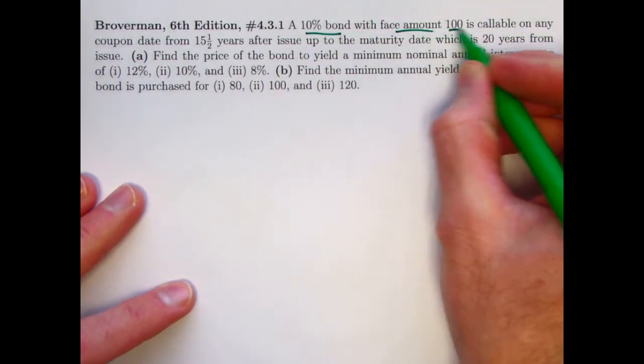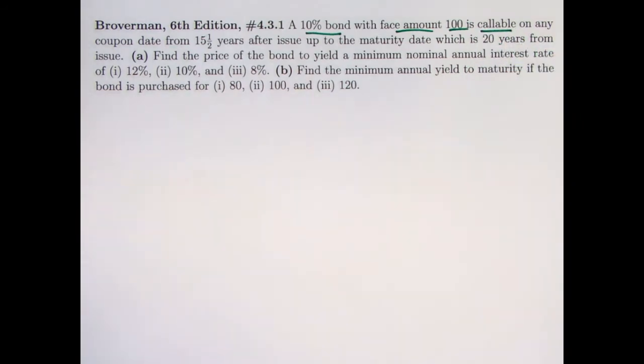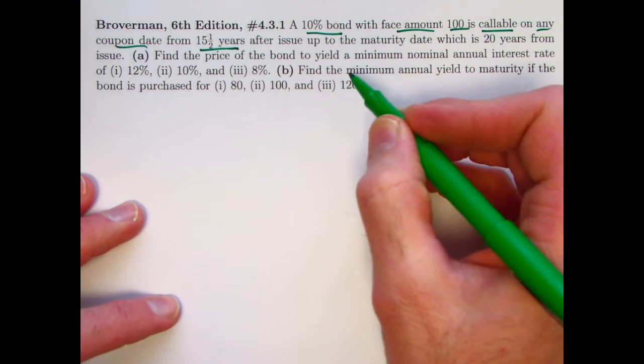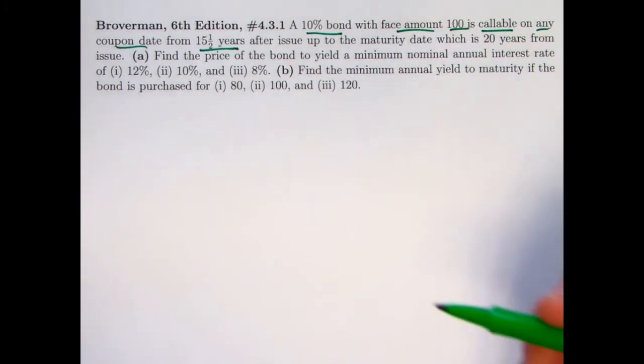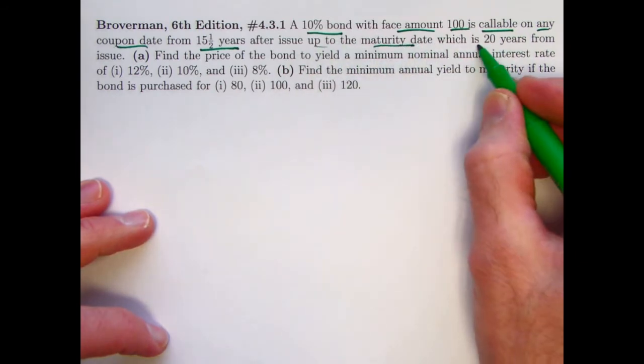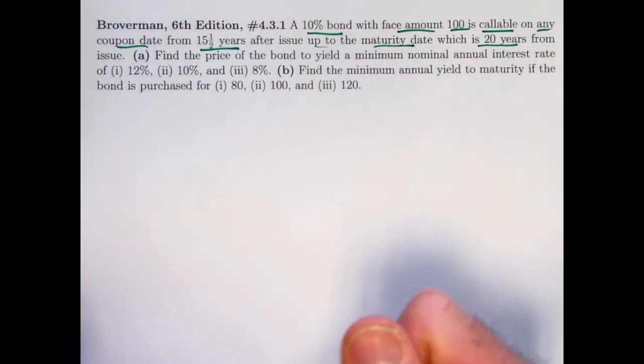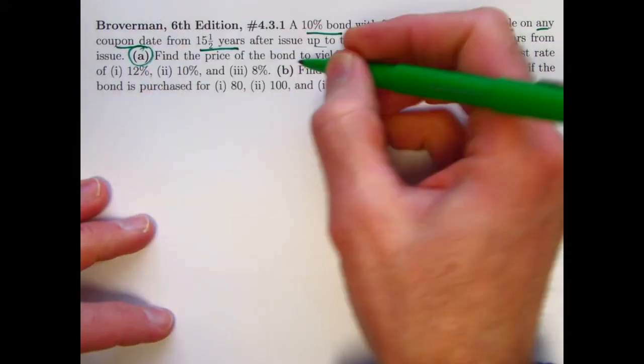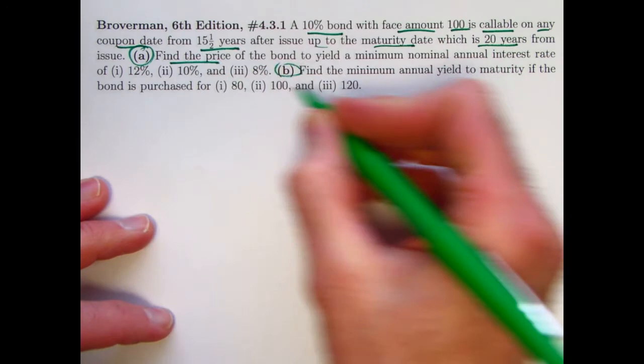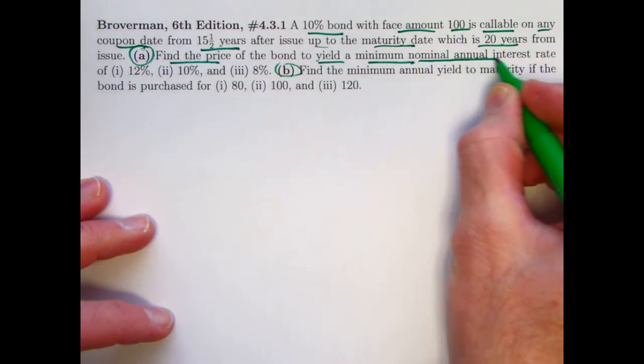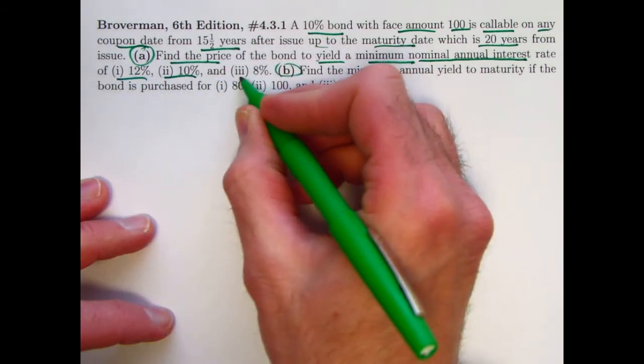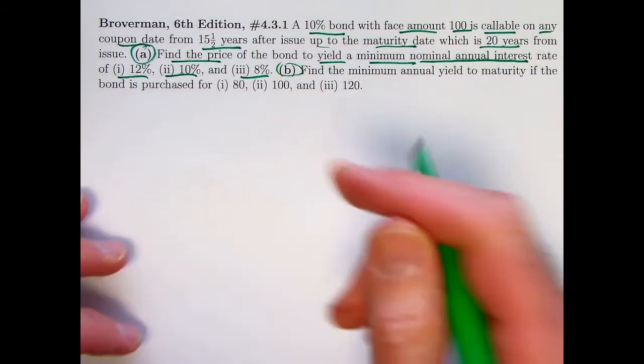So let's go ahead and look at the problem. We've got a 10% bond with a face amount of 100. It's callable or redeemable on any coupon date from 15 and a half years, evidently this is semi-annual coupon, so that would be the 31st coupon, after issue up to the maturity date, which is 20 years, 40th coupon from the issue. Two parts of the problem, a part A and a part B. In part A, we'll be finding the price of the bond to yield the minimum nominal annual interest rate of three different values, 12%, 10%, and 8%.